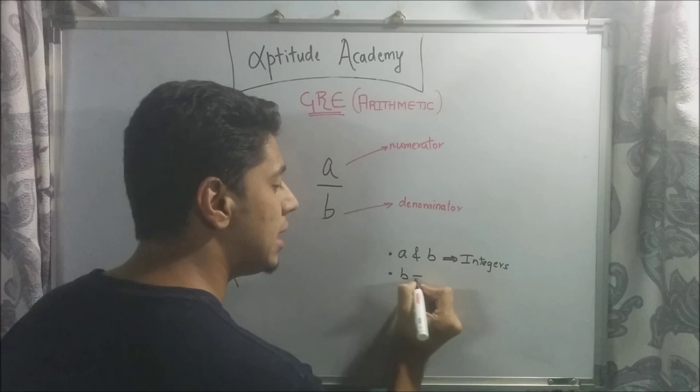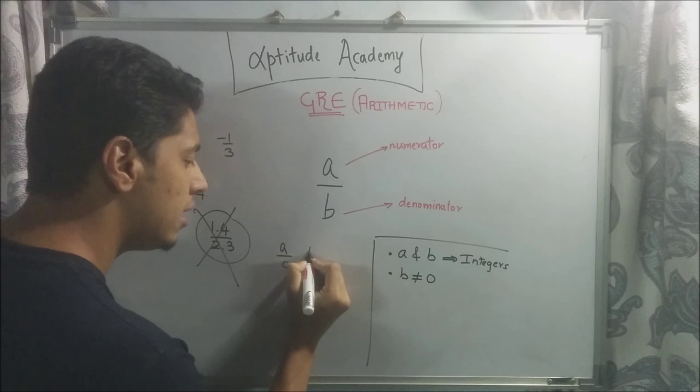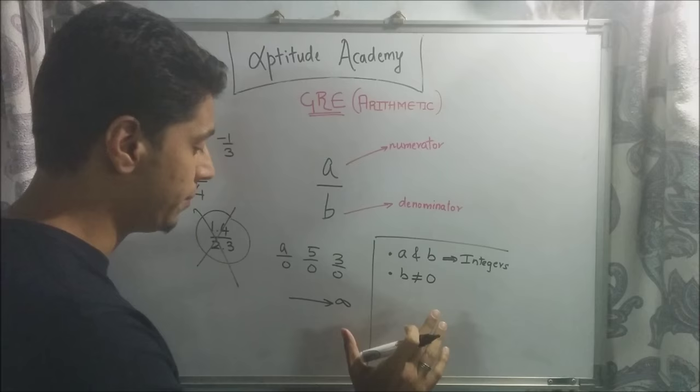And your second rule says that B is not allowed to have a value 0. B is not equal to 0. Because when B is equal to 0, this fraction becomes A over 0. If you put any value of A, you put 5 over 0 or 3 over 0, they all tend to infinity, which is not really good. So what we have is this rule which says that B is not allowed to be 0.